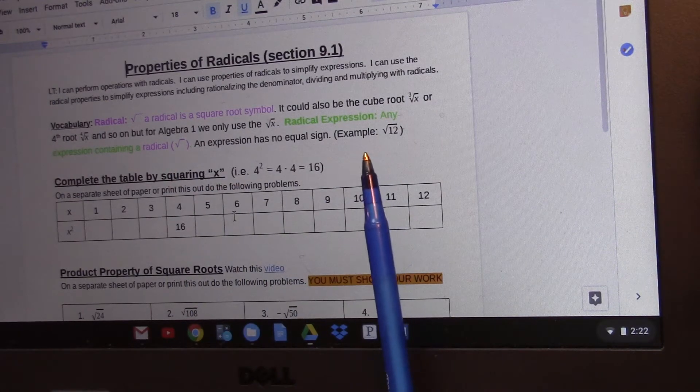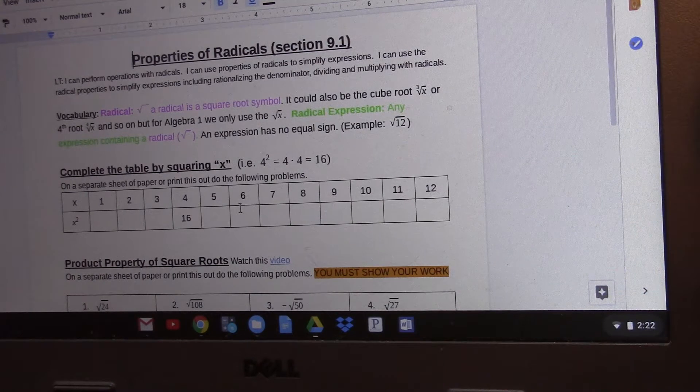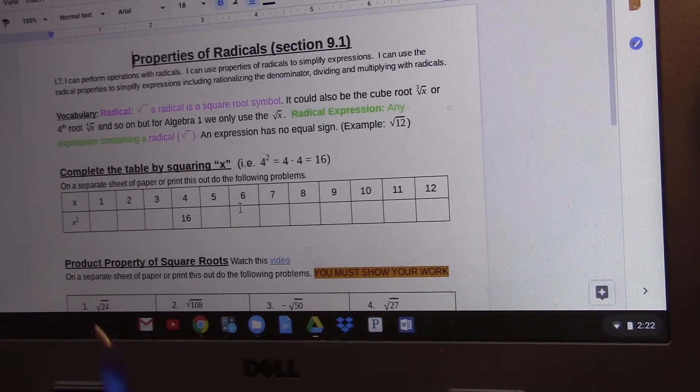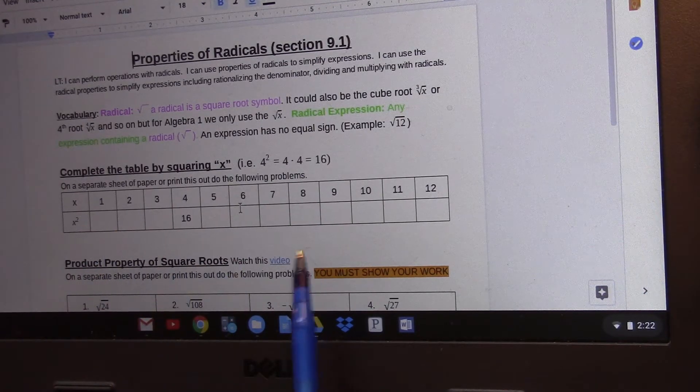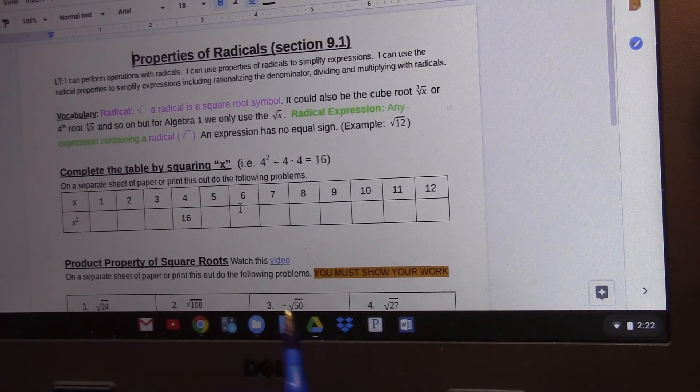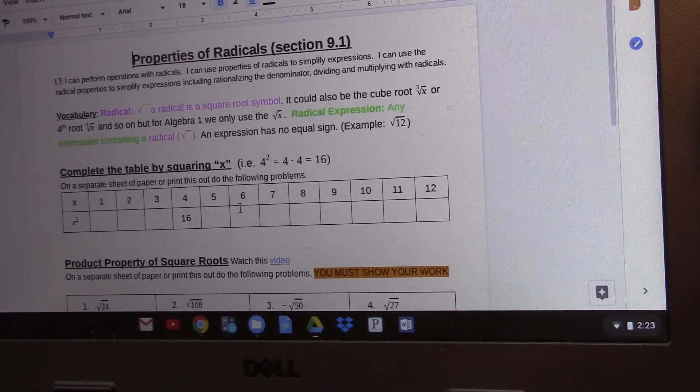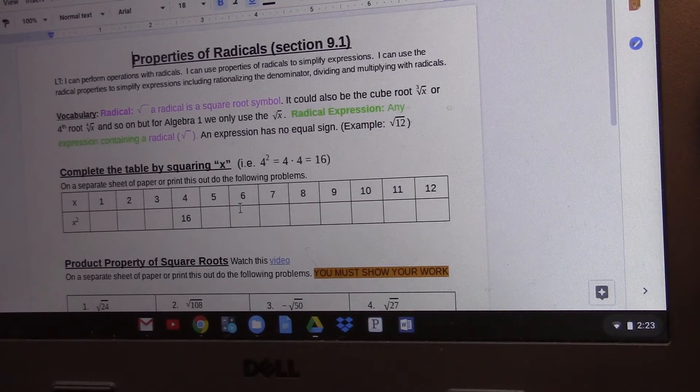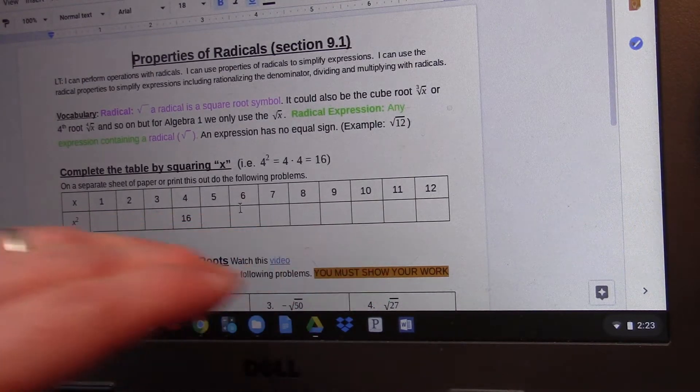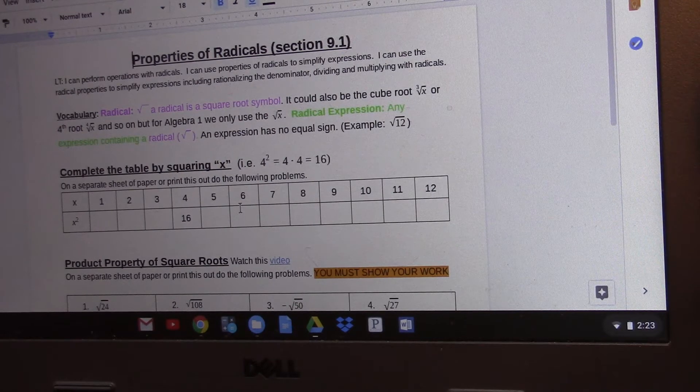Then a radical expression is really anything that has a square root in it, like for instance square root of 12 which actually we can break down. And the first part of your assignment, and I'm going to actually show you the answers in just a second, is filling in this chart here. Of course you're going to do this on a separate sheet of paper. You're not going to be able to write into this.